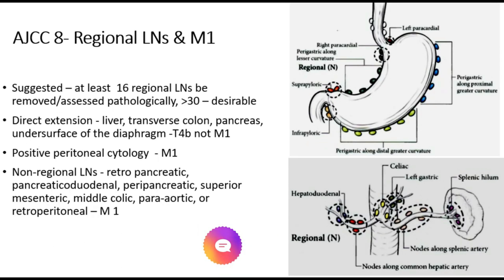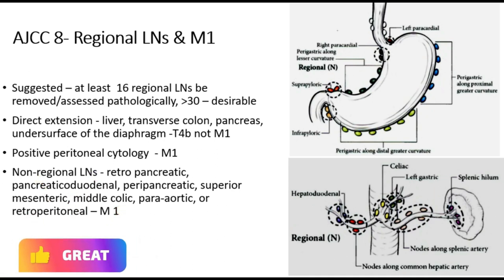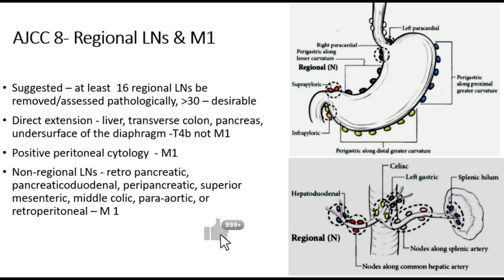Regarding the classification of regional lymph nodes as per the AJCC-8: in the latest edition of the American Joint Committee on Cancer, they have recommended that at least 16 regional lymph nodes be removed or assessed pathologically, and more than 30 are desirable for complete pathological assessment for carcinoma stomach. The direct extension into liver, transverse colon, pancreas, or undersurface of the diaphragm is T4B, not M1. It is important to understand that direct extension into adjoining organs is locally advanced disease, T4B, but is not metastatic disease.